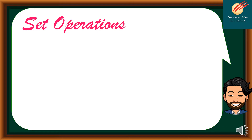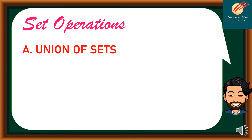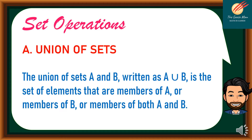The first operation we will talk about is the union of sets. The union of sets A and B, written as A union B, is the set of elements that are members of A, or members of B, or members of both A and B.